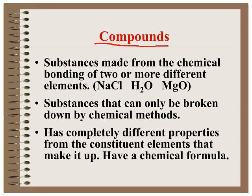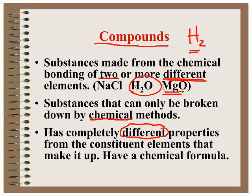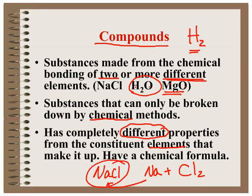Compounds are substances made from the chemical bonding of two or more different elements, and that's the key. H2O contains hydrogen and oxygen. That's two different elements. MgO, two different elements. H2, even though there are two atoms of H, that is not a compound. Compounds can only be broken down by chemical methods, cannot use physical methods, and the compound has completely different properties from the elements that make it up. So sodium chloride is made from sodium metal, which is a highly reactive metal, and chlorine gas, which is a toxic gas. When they combine to form sodium chloride, the compound sodium chloride has a cubic structure crystal, that white solid that you sprinkle on your food. None of the properties are the elements that make it up.